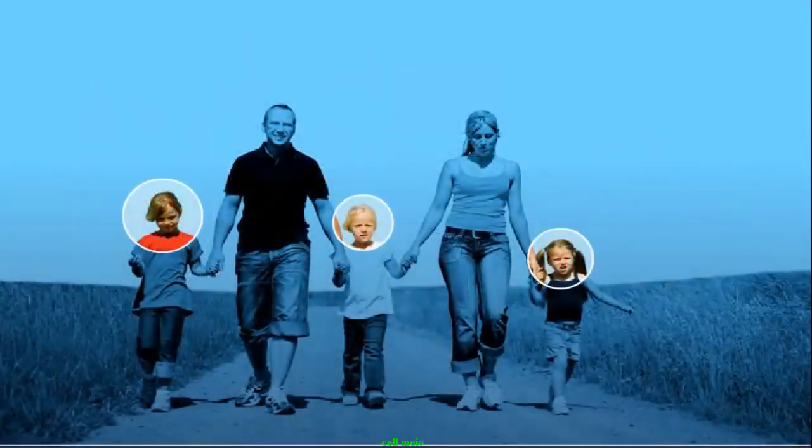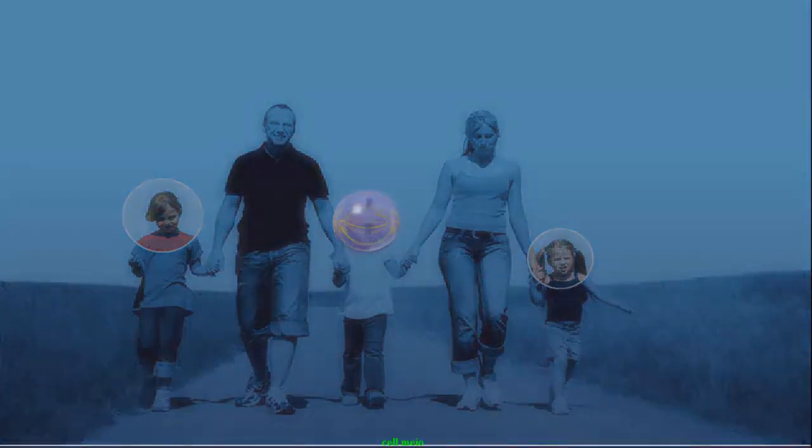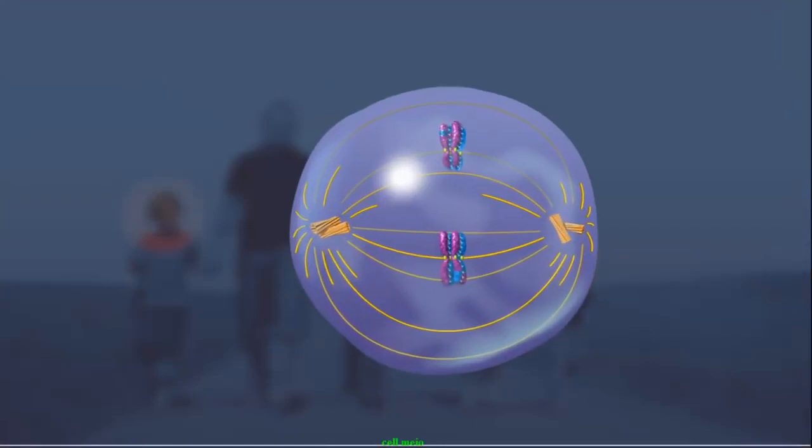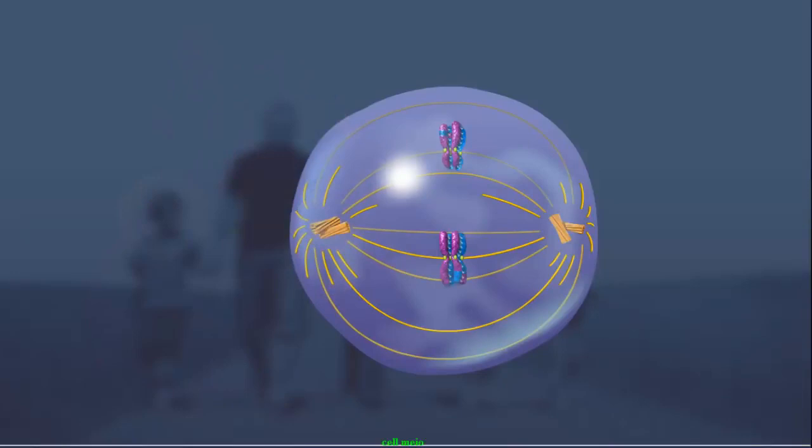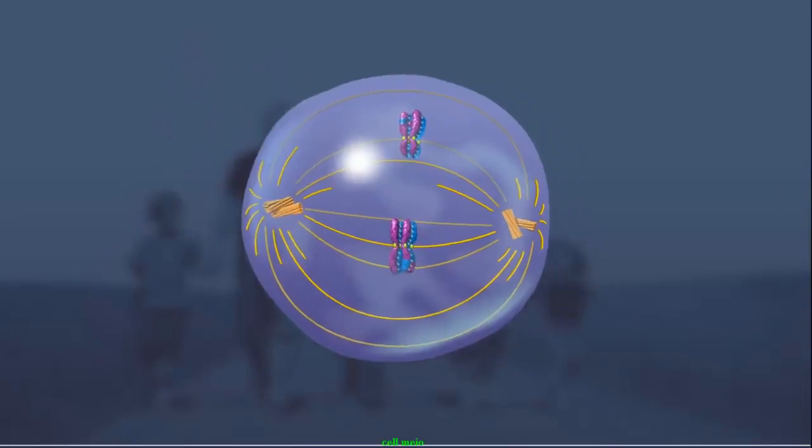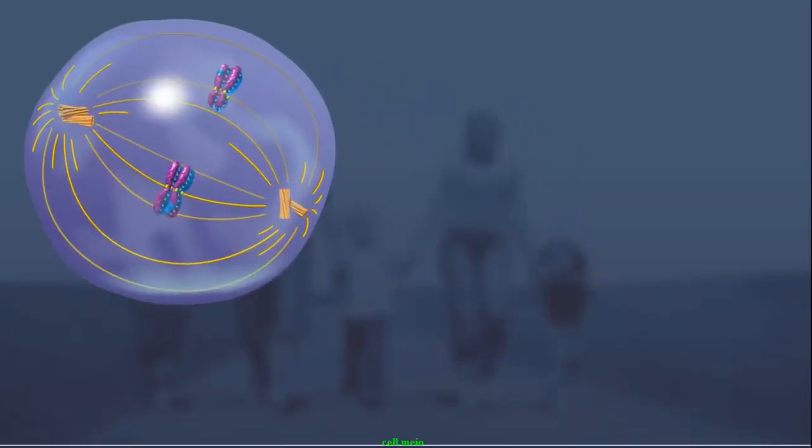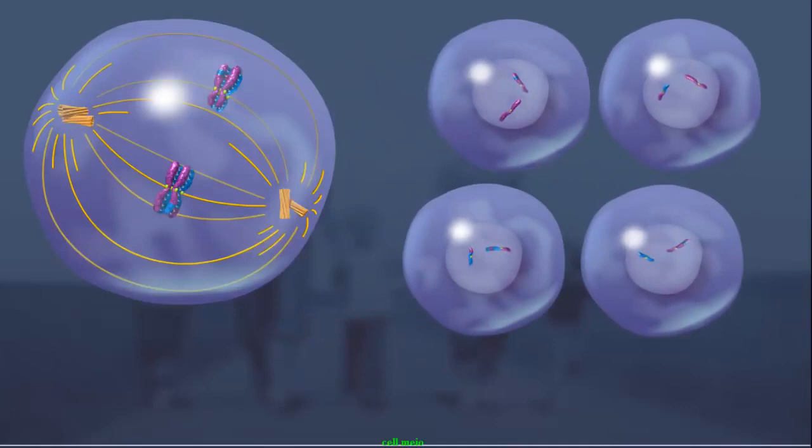But why aren't siblings identical? The diversity comes from several sources. In prophase I, non-sister chromatids can exchange DNA through crossing over, increasing the genetic diversity of individual chromatids. In addition to crossing over, in metaphase I, the pairs of homologous chromosomes align independently along the metaphase plate, and sort independently into the daughter cells.